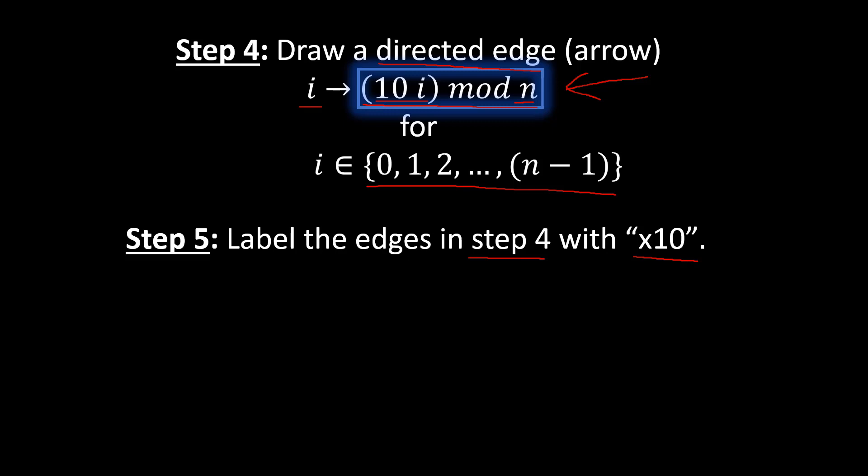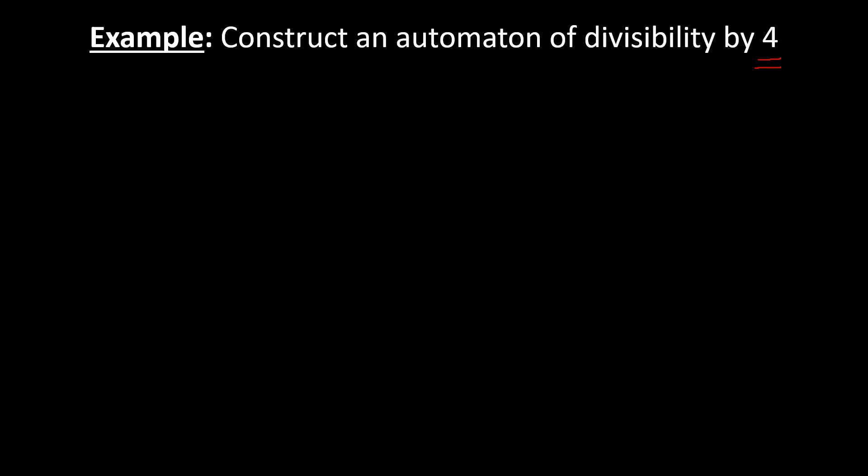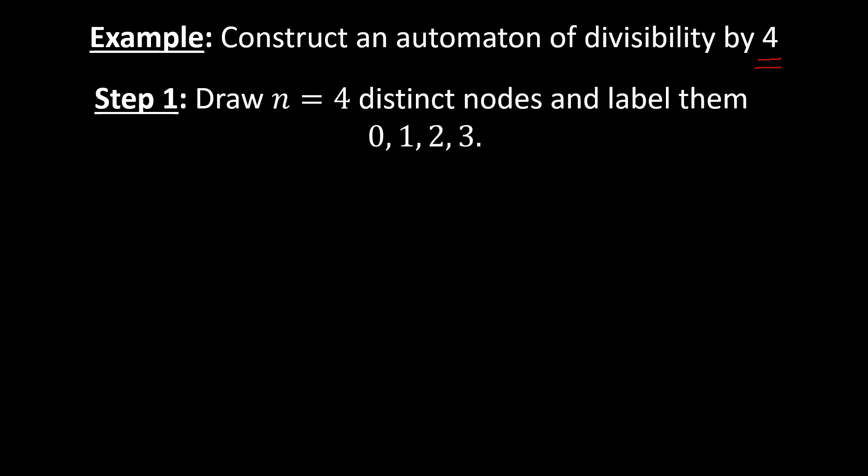Let's put this into practice with an example: the automaton of divisibility by 4, so n equals 4. For step 1, we draw 4 distinct nodes and label them 0, 1, 2, and 3 — going from 0 to n minus 1, which is 3 in this case.